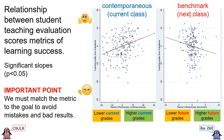Looking at the data, it's no surprise that in the figure for the current class, as you go from lower grades to higher grades the student evaluations go up - instructors that give higher grades get higher teaching evaluations. But the second figure is really interesting: instructors who have students that go on to get better grades in the future actually get lower teaching evaluation scores than instructors whose students go on to get poorer grades in the future. This is actually a negative relationship between teaching evaluations and how much students appear to be learning, and both slopes are significant with a p-value less than 0.05.